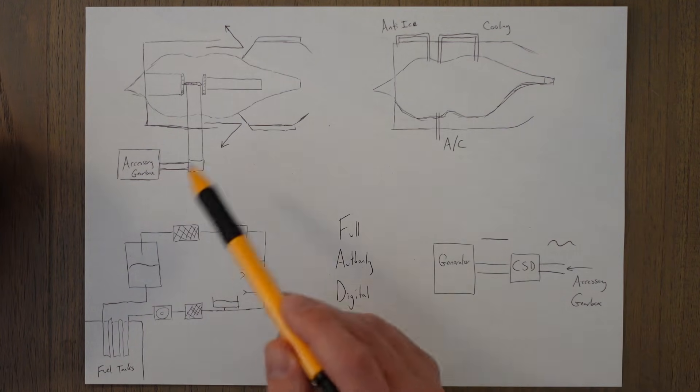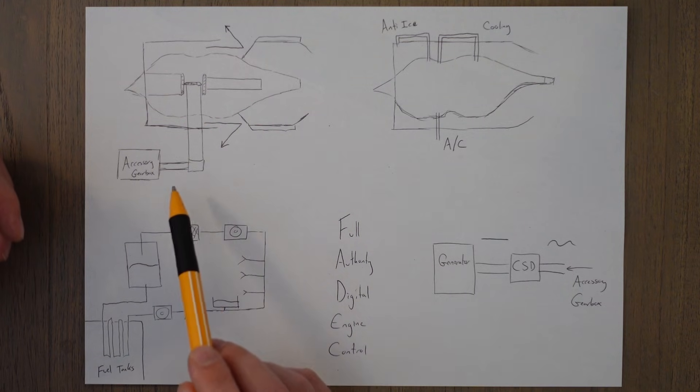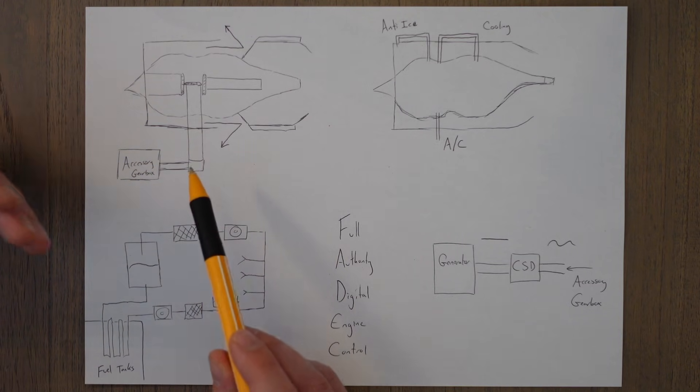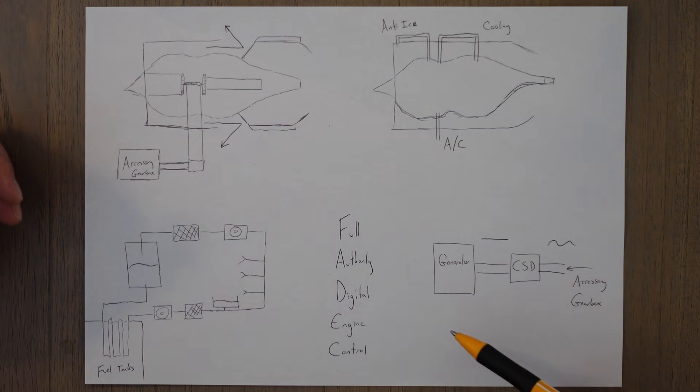The accessory gearbox is that other method of drawing away power. It uses a system of gears and shafts and sometimes an intermediate gearbox, and the accessory gearbox can run mechanical things like pumps. And we can also attach it to a constant speed drive to generate electricity.